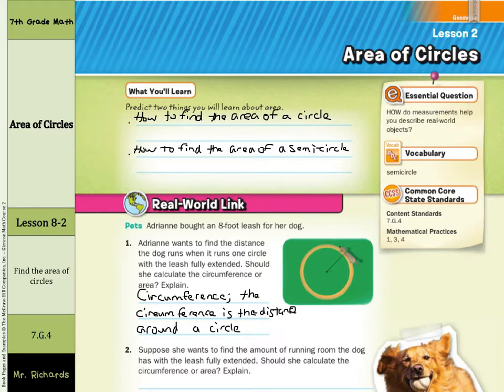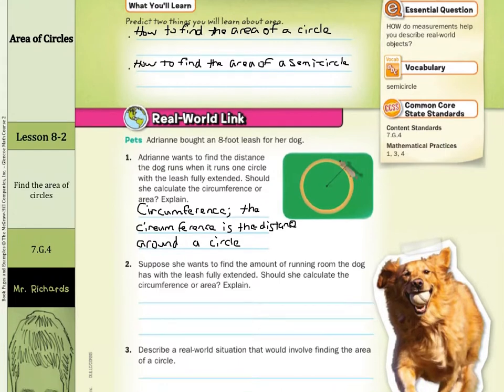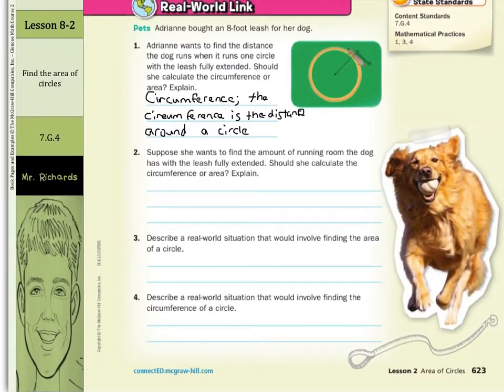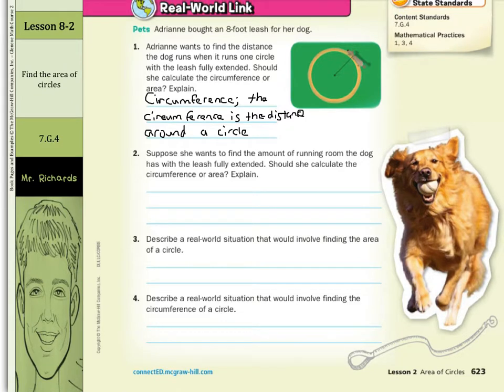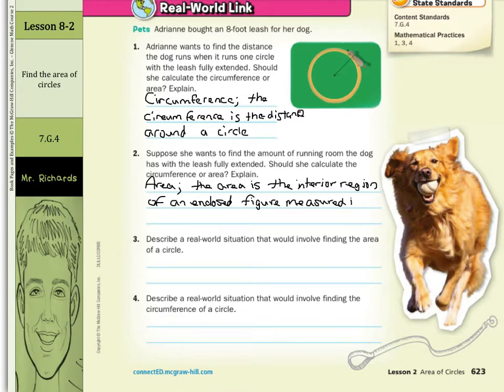Next, suppose she wants to find the amount of running room the dog has with the leash fully extended. Should she calculate the circumference or the area and explain? Well, if she's looking for the area inside this enclosed figure, that would be area. And our explanation can be the area is the interior region, the inside region, of an enclosed figure measured in square units.